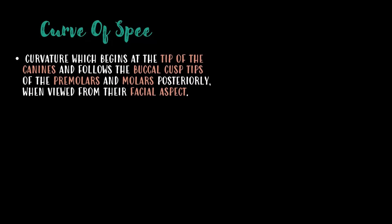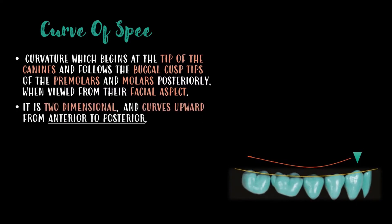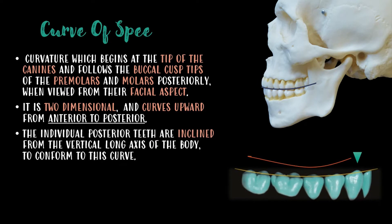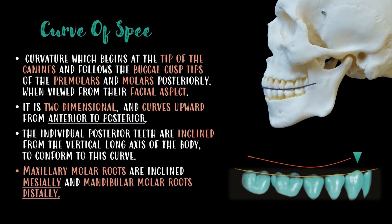Beginning with the curve of Spee. It is the curvature that begins at the tip of the canines and follows the buccal cusp tips of the premolars and molars posteriorly when viewed from the facial aspect. It is two-dimensional and curves upward from anterior to posterior. The individual posterior teeth are inclined from the vertical long axis of the body to conform to this curve. Maxillary molar roots are inclined mesially and mandibular molar roots are inclined distally.